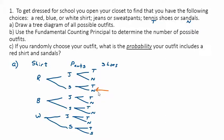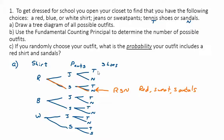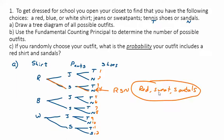Let's pick one branch — for example, red shirt, sweatpants, and sandals. That's one possible outfit out of 12. I could ask you to list all the possible outfits, and there are indeed 12 of them.